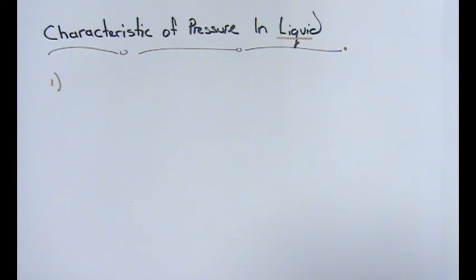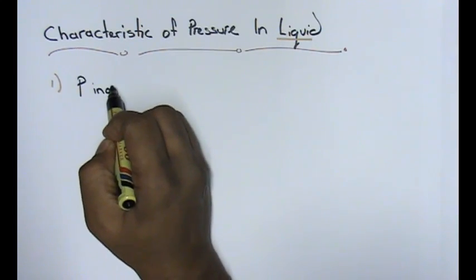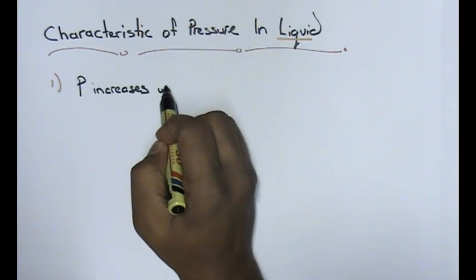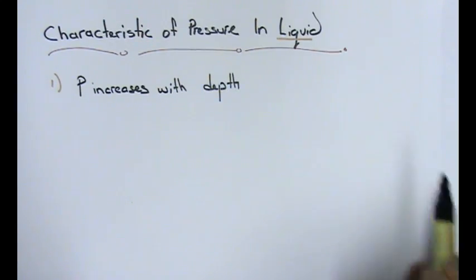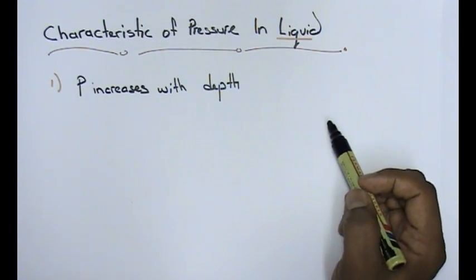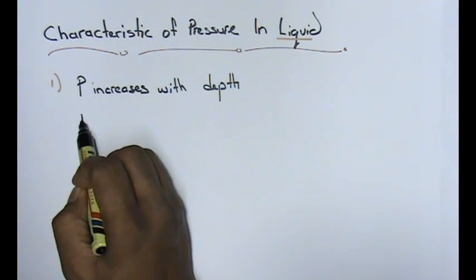Golden rule number one for pressure is that pressure increases with depth. This is golden rule number one. What does it mean by pressure increases with depth?